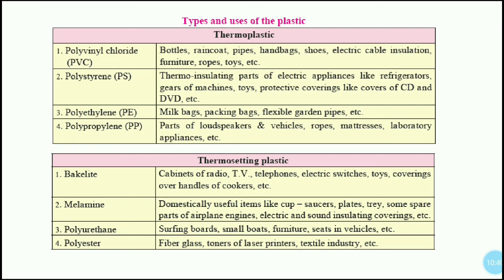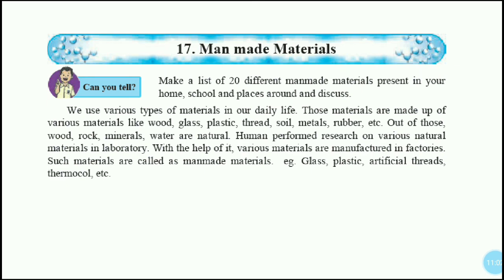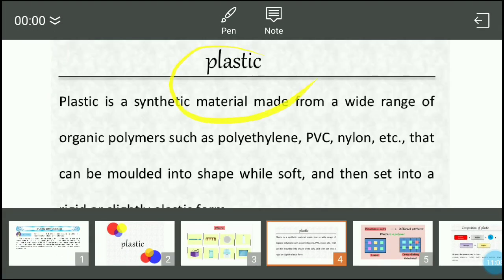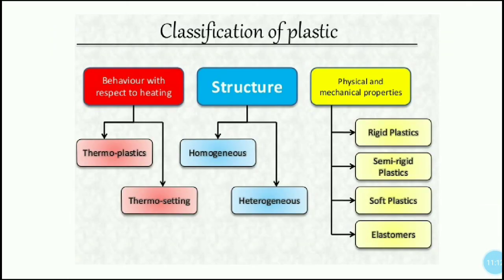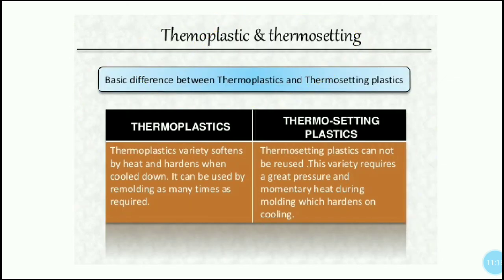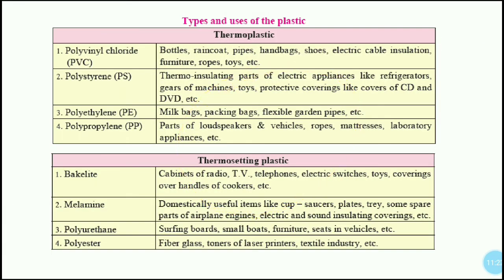So this is our chapter for today. Next we will discuss properties of plastics and environmental effects. For homework: Question 1 is the exercise listing 20 man-made elements present in school. Question 2 is the definition and classification of plastic. Question 3 involves writing the composition, and then the definition of types and uses of plastics — that is, the definition of thermoplastic and thermosetting. Thank you.